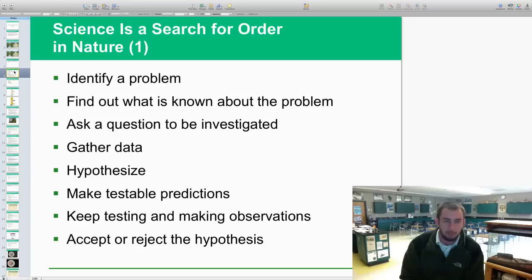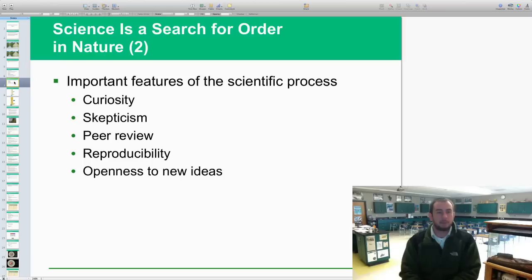We identify a problem, mostly through an observation. Then we find out what is known about the problem, ask a question to be investigated. Then we come up with a way of investigating it, gather that data, then make some hypotheses or inferences, then make testable predictions, and then keep testing and making observations, and then at the end you reject or accept your hypothesis. Kind of the basic scientific method that you guys have learned about for a long time.